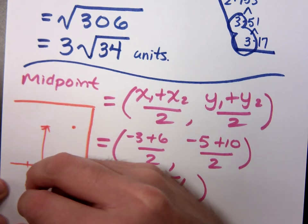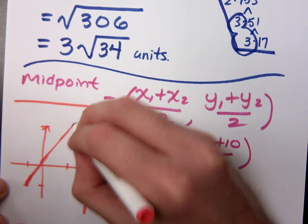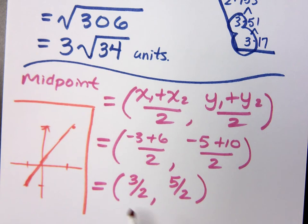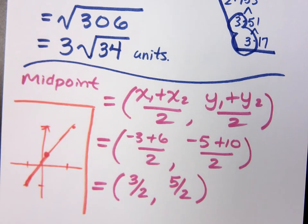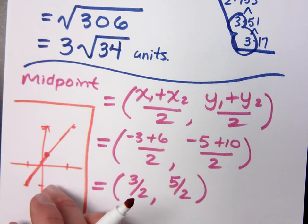Now I come up with the midpoint being 3 halves and positive 5 halves, which looks to be somewhere right about here. Does that look to be about midway or halfway between those two points? It may not be exact because I just very sloppily hand drew something. But at least it's close enough for me to make sure that it makes sense.